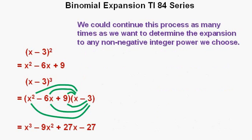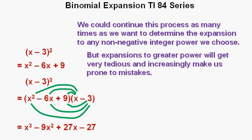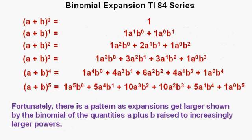We could continue this process as many times as we want to determine the expansion to any non-negative integer power we choose. But expansions to greater powers will get enormously tedious and increasingly prone to foster mistakes as the numbers and complexities of calculations increase. Fortunately, there is a pattern to expansions as they get larger, shown by the binomial of the quantities a plus b raised to increasingly larger powers. And here we go as high as quantity a plus b to the fifth power.